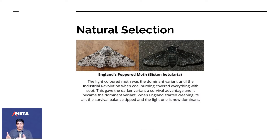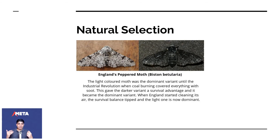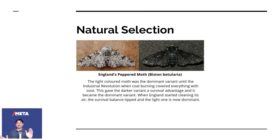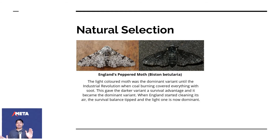A recent example of natural selection: in England there were peppered moths. A light-colored moth was dominant, but when the industrial revolution started covering everything in soot from coal burning, the darker moths started surviving better — they were harder to see. The darker moths gained a survival advantage and became the dominant variant. When England cleaned its air, the survival balance tipped back and the light moth is now dominant again.